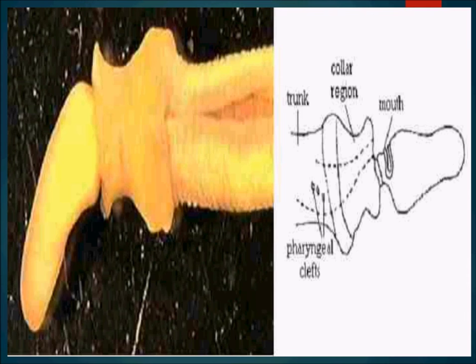Reproduction in pterobranchia is by asexual means through budding, which is very common and often gives rise to colonies starting from a single individual. However, sexual reproduction is the normal method and is similar to enteropneusta with external fertilization. Each animal has only a single gonad. Pterobranchia differ from enteropneusta in having only one, or in some species no, pharyngeal slits. Because these animals are very small, respiration simply across the body surface poses no problem.